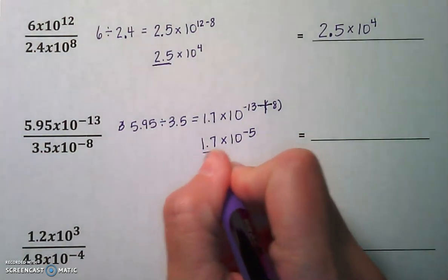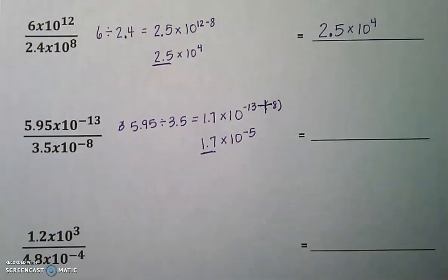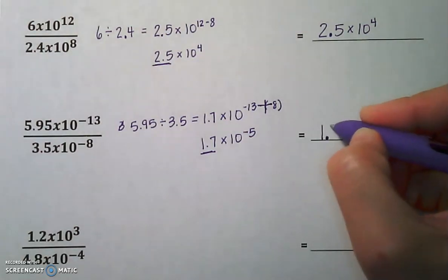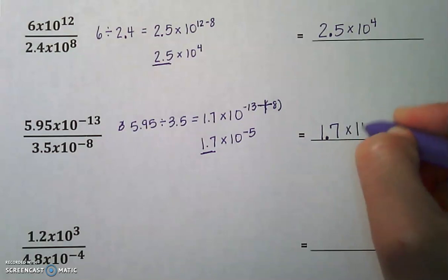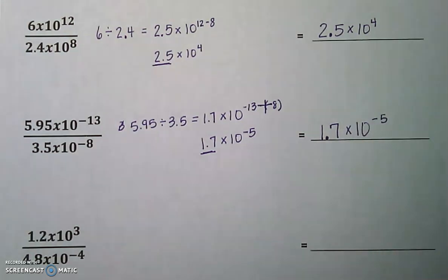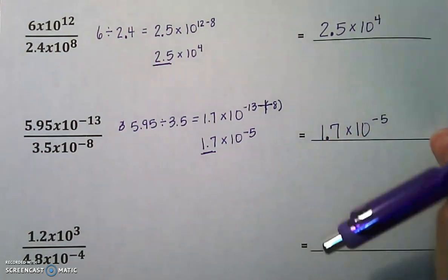Double check your factor here. Is it a value greater than 1 and less than 10? 1.7 is greater than 1 and less than 10. So we get 1.7 times 10 to the negative 5 as our final answer. Let's take a look at the next example.